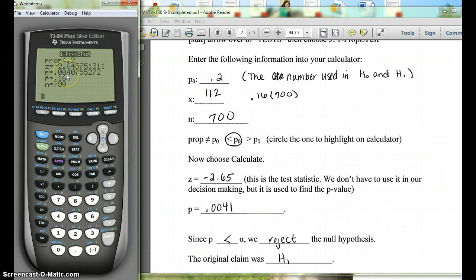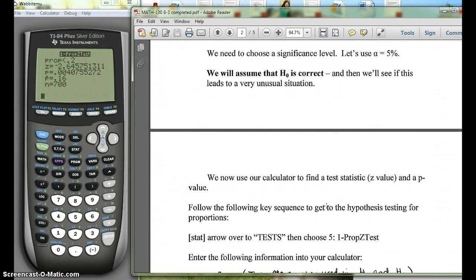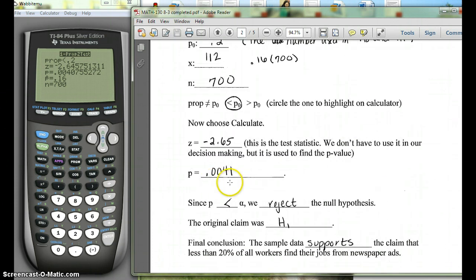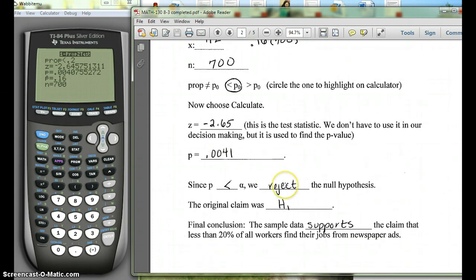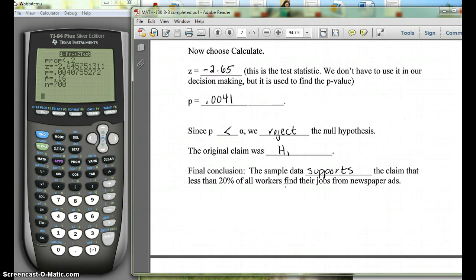You can see here, the second one is your p-value, 0.0041, if we round to four decimal places. Since we were told to use 5%, alpha is 0.05. Since this is less than 0.05, we would reject the null hypothesis. So that means we support the alternate hypothesis.